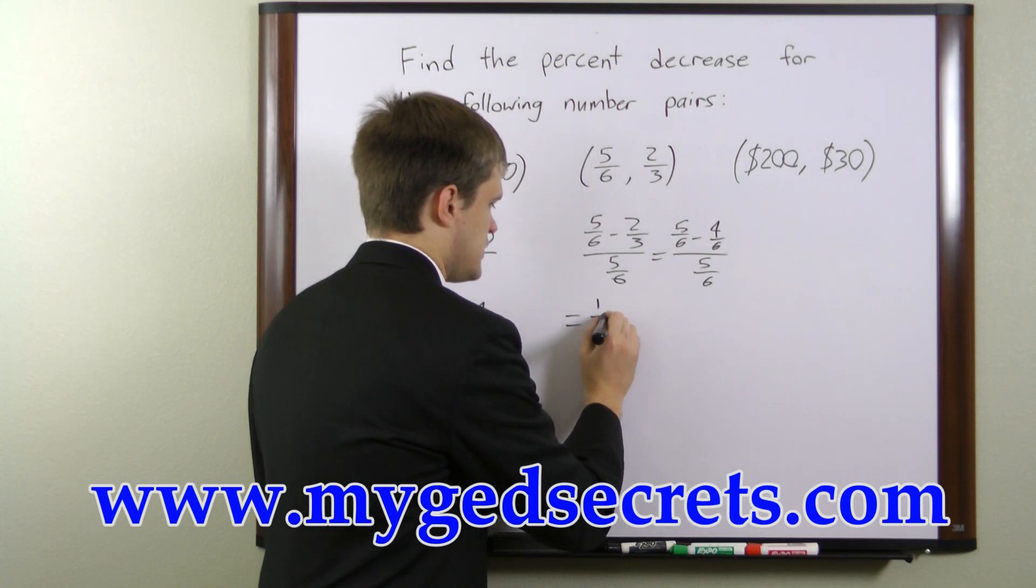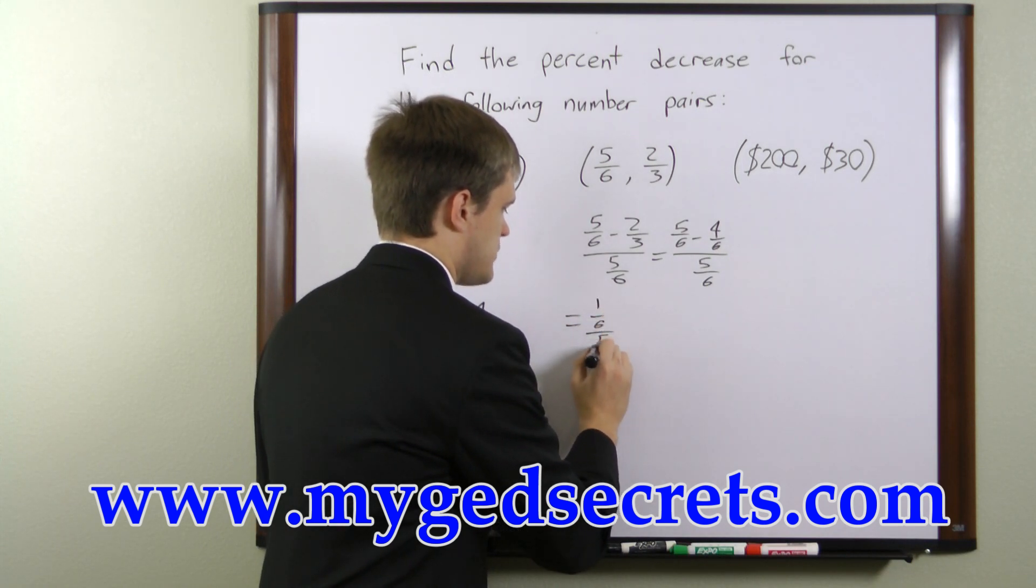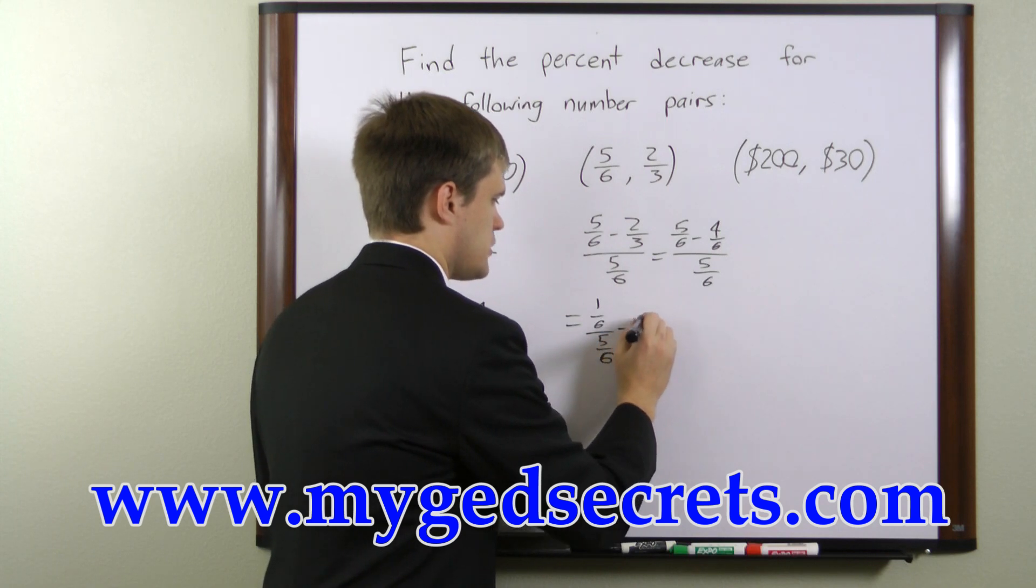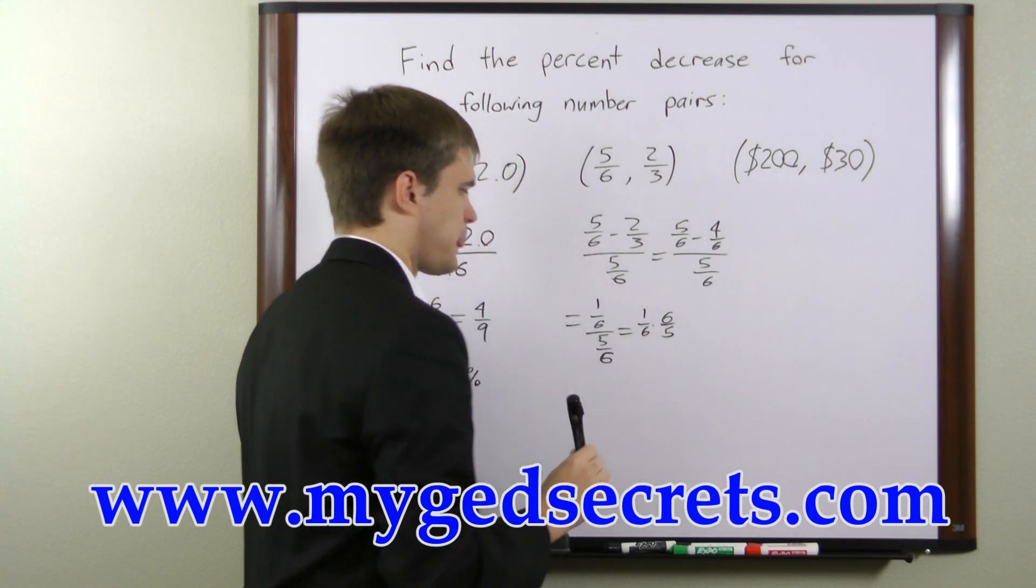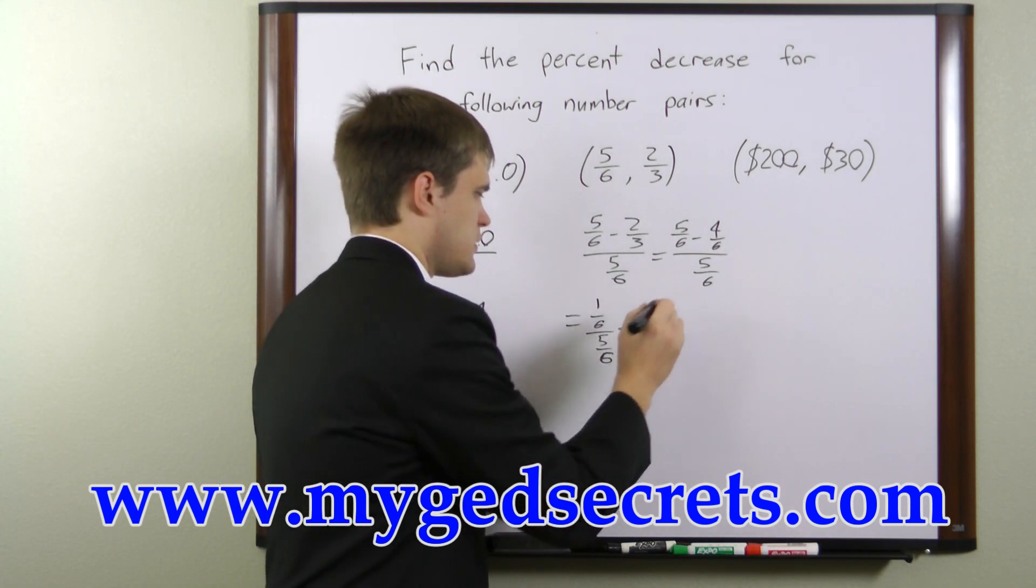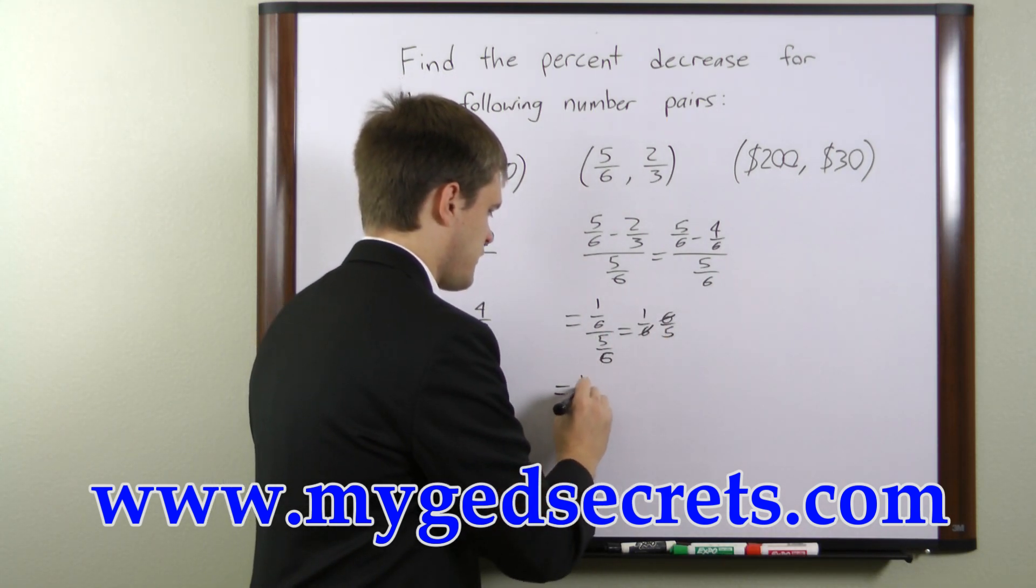So what we have is 1 over 6 divided by 5 over 6, or 1 over 6 times 6 over 5. Now the 6's cancel here and what we're left with is just 1 over 5. The percentage equivalent for 1 over 5 is 20%.